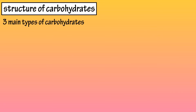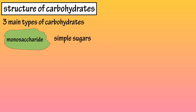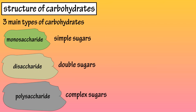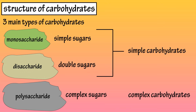There are three main types of carbohydrates: monosaccharides, which are also called simple sugars; disaccharides, which are also called double sugars; and polysaccharides, or complex sugars. Monosaccharides and disaccharides are also known as simple carbohydrates. Let's start by looking at monosaccharides.